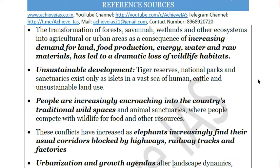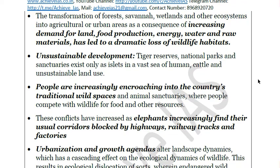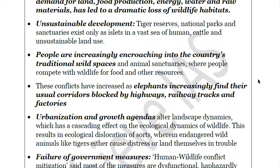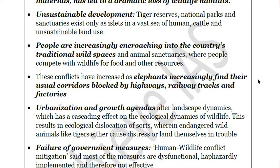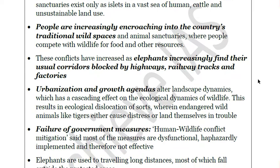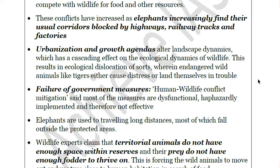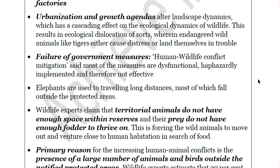Urbanization increases demand for raw materials — when a civilization urbanizes, its demand grows. Specialization and different economic activities demand raw materials that can only be obtained by using land or cutting forests. There is also failure of government measures — most human-wildlife conflict mitigation measures are dysfunctional, poorly implemented, and therefore not effective. Elephants travel long distances, mostly outside protected areas, and territorial animals do not have enough space within reserves.